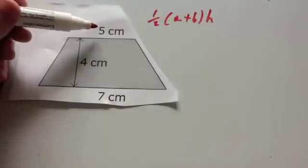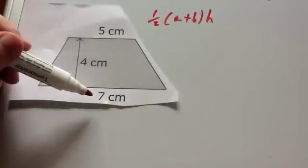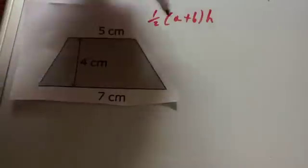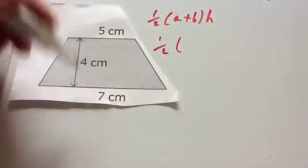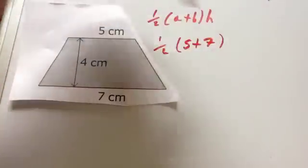So A and B, well in this case A is 5 and B is 7, and the height is 4. So what we're going to do is we're going to half the sum of 5 and 7, so you're going to add together 5 and 7, and then you're going to times that by 4.